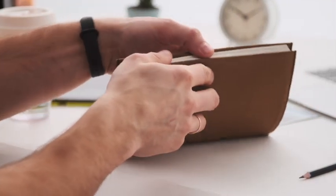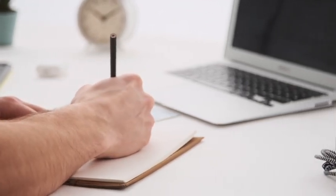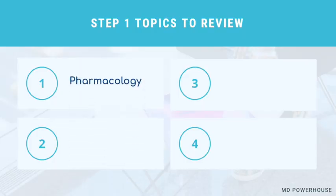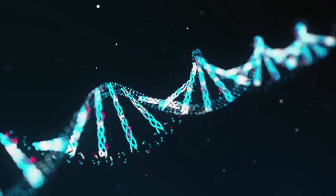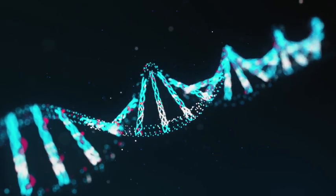Before going to Day 1 of Step 3, here are some Step 1 topics you need to review. First, review your pharmacology — it's very common to be tested on mechanisms of action of different drugs like antibiotics and anti-cancer medications. If you used Sketchy Pharm for Step 1 and Step 2 CK, do a quick review if you have time; at minimum, review antibiotics. Next, review genetics — genetic disorders and inheritance patterns are very crucial.